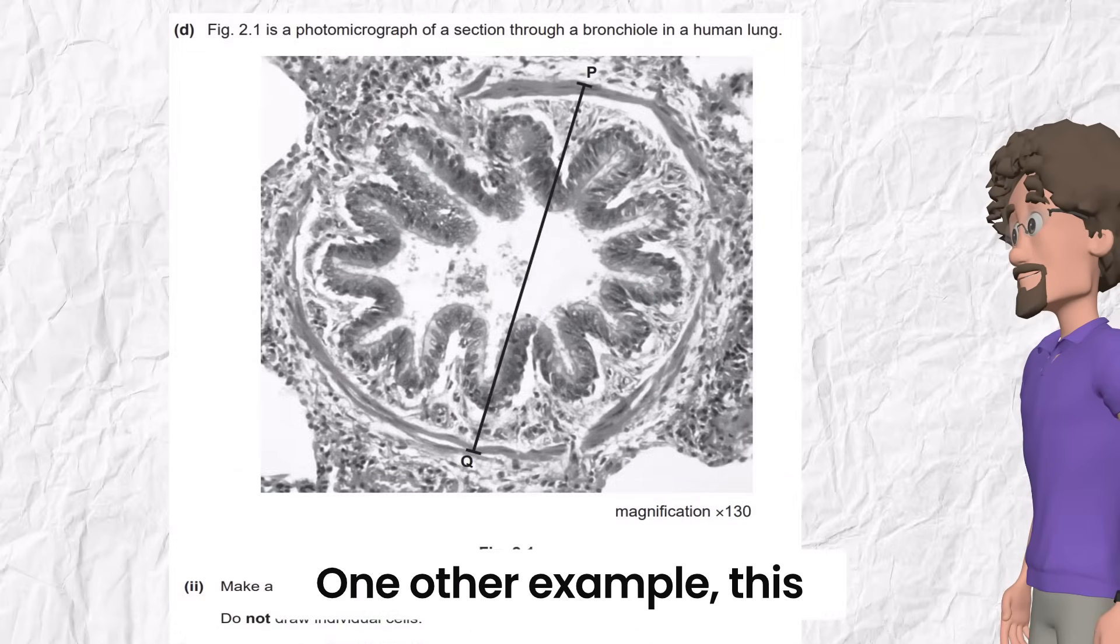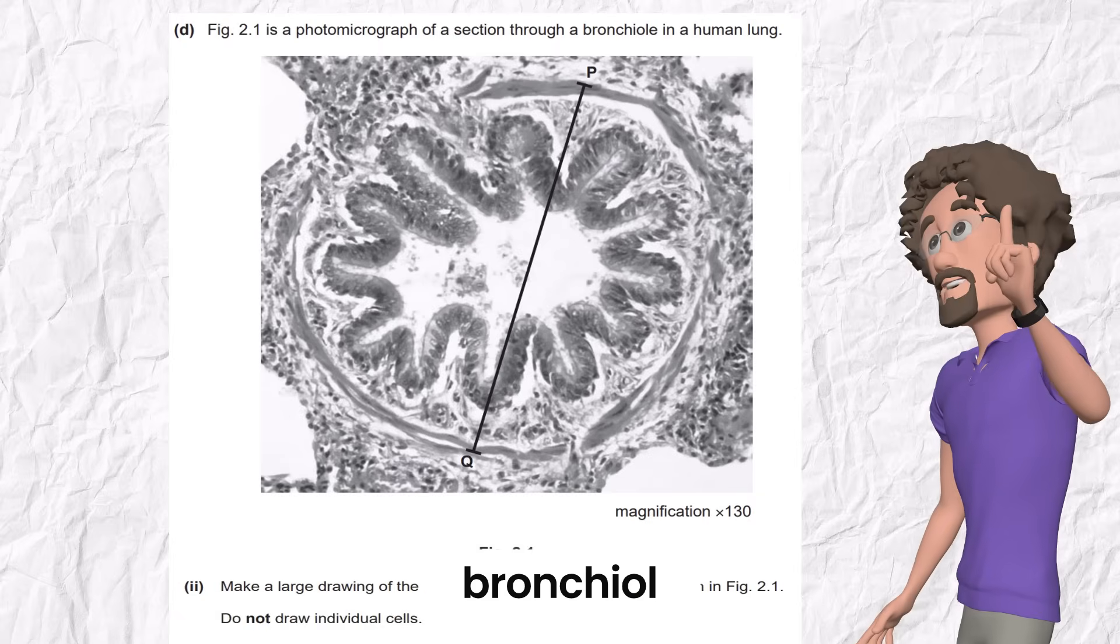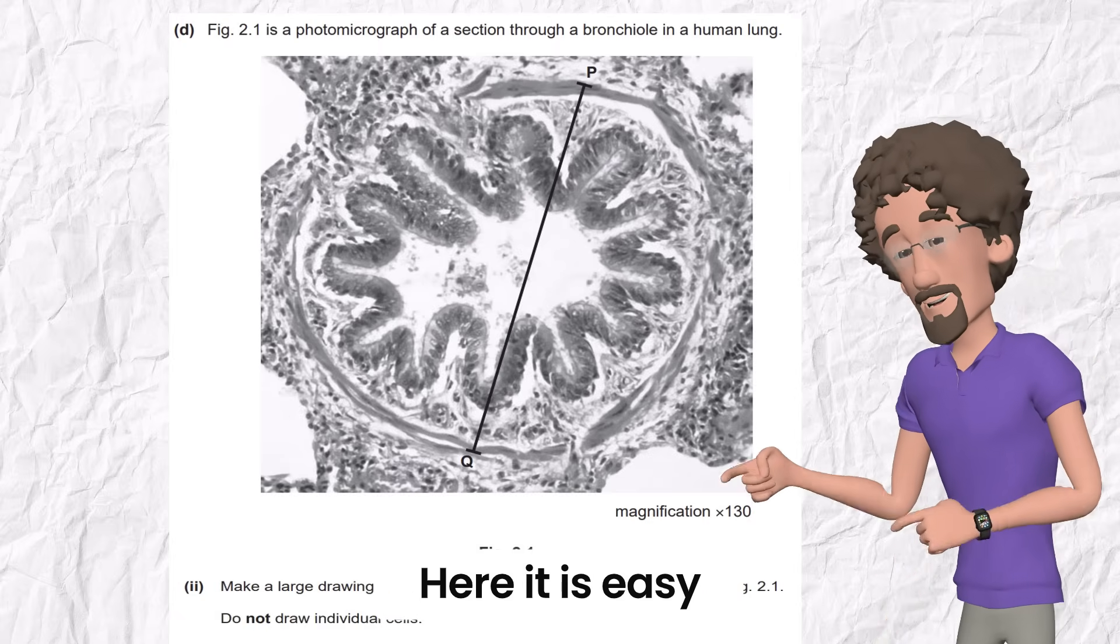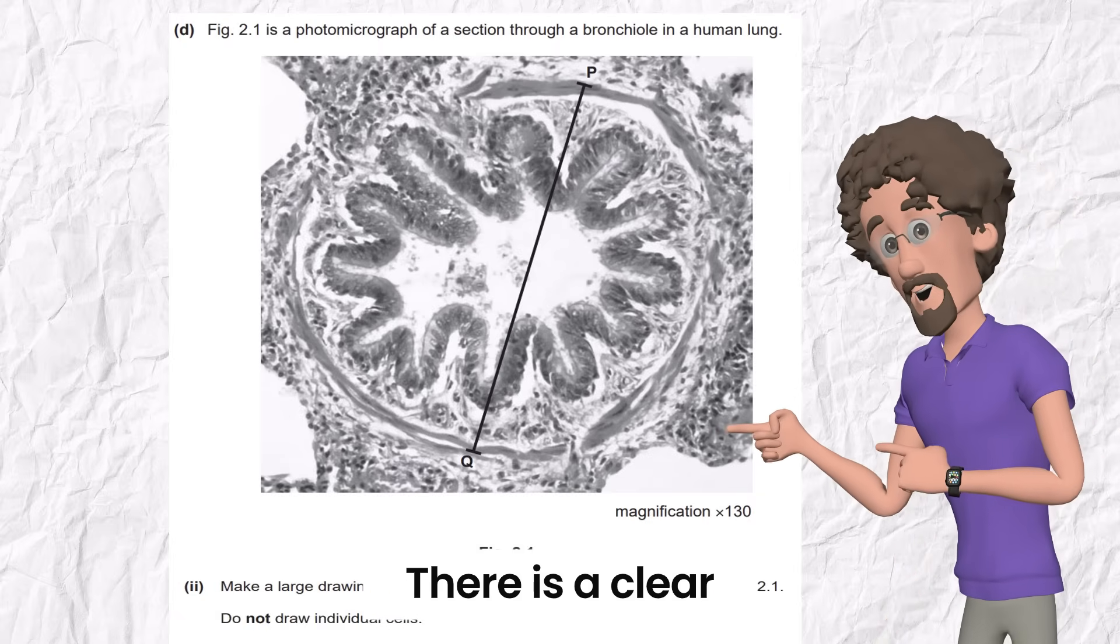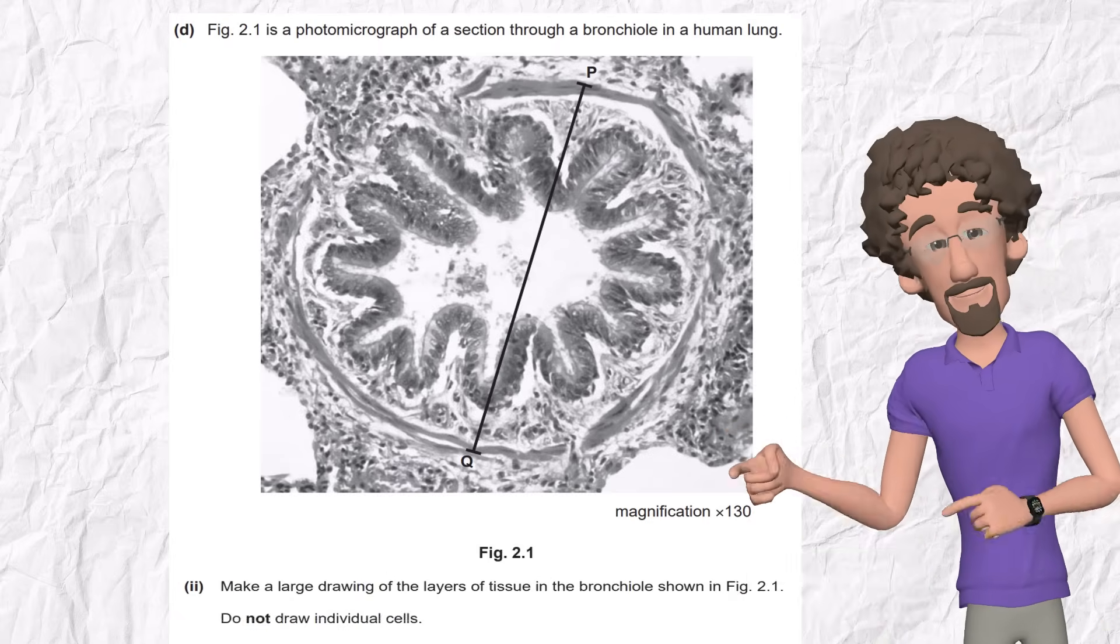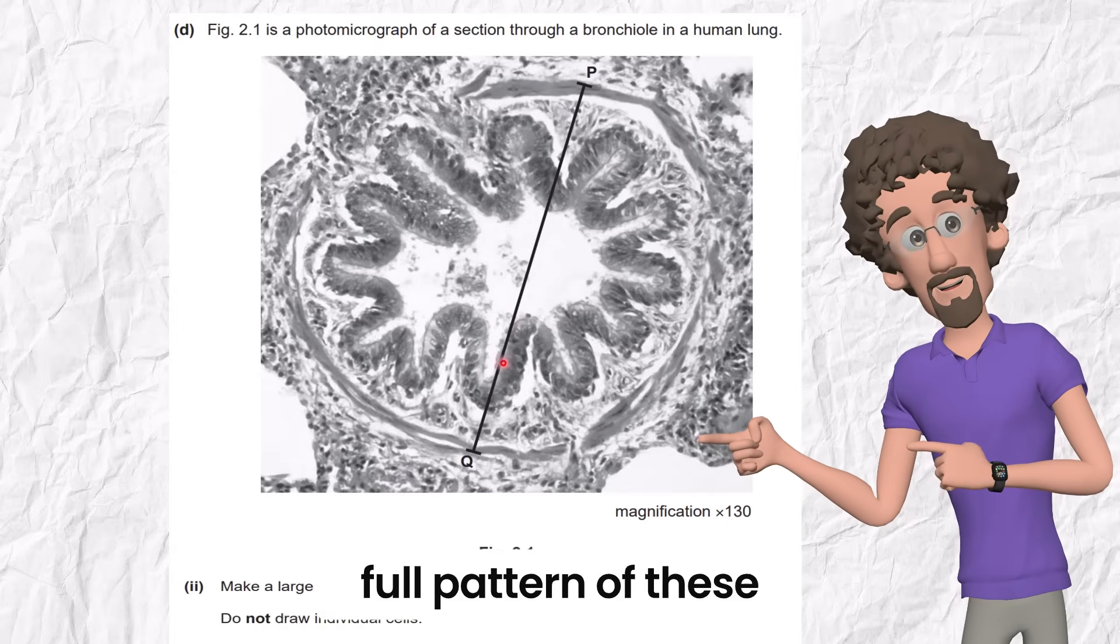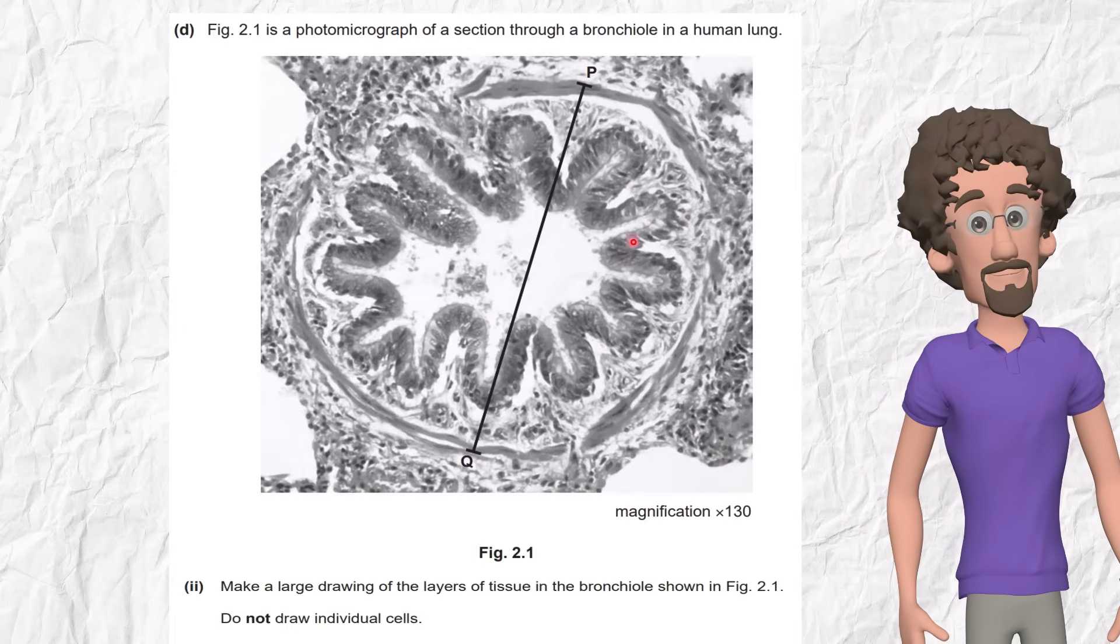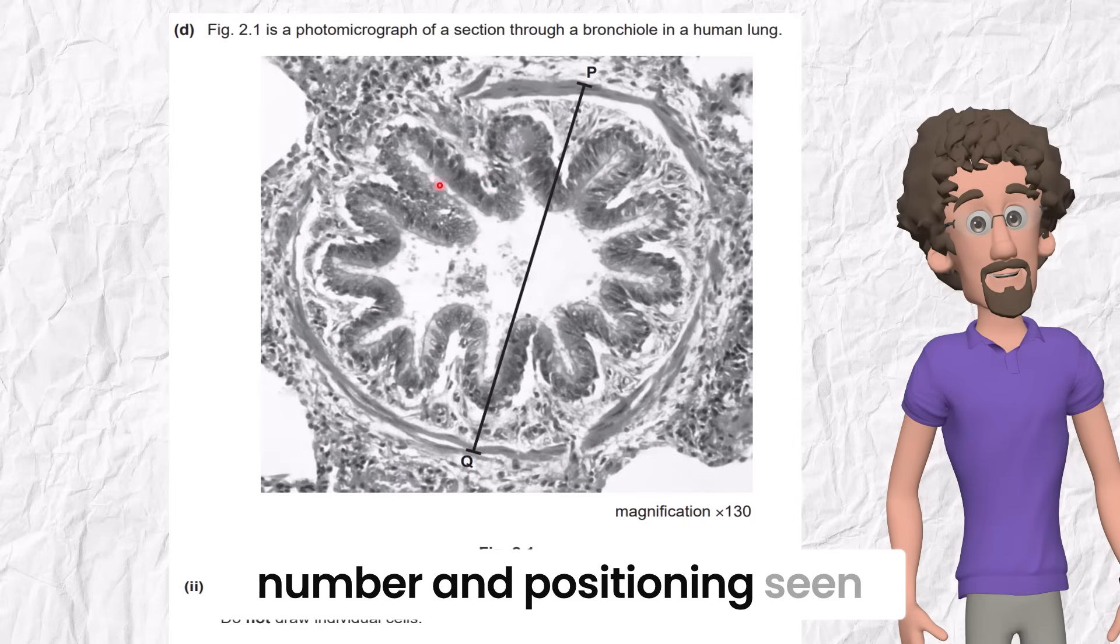One other example, this drawing of the layers of tissue in the bronchiole. Here it is easy and to the point. There is a clear invagination of bronchiole lining. You must draw the full pattern of these invaginations around the inner lumen. They must match the number and positioning seen in the image.